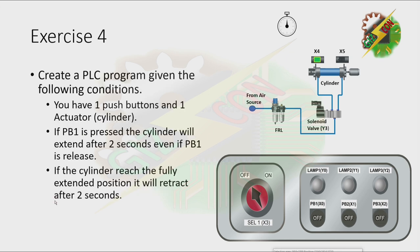Exercise 4: Create a PLC program given the following conditions. You have one push button and one actuator. If PB1 is pressed, the cylinder will extend after 2 seconds, even if PB1 is released. If the cylinder reaches the fully extended position, it will retract after 2 seconds. In the last exercise we needed to press and hold PB1 for 2 seconds, but in this problem we don't need to hold the button — just pressing PB1 will automatically activate it after 2 seconds.